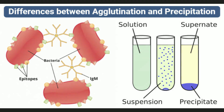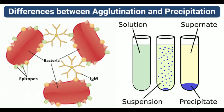Agglutination is based on the principle of clumping of particles, while precipitation is based on the principle of lattice formation. Agglutination involves complex-forming chemical reactions, whereas precipitation involves chemical reactions between ions and salt molecules. A non-gel matrix is required for agglutination, while a liquid or semi-solid matrix is required for precipitation. Agglutination results in agglutinates; precipitation results in precipitates.